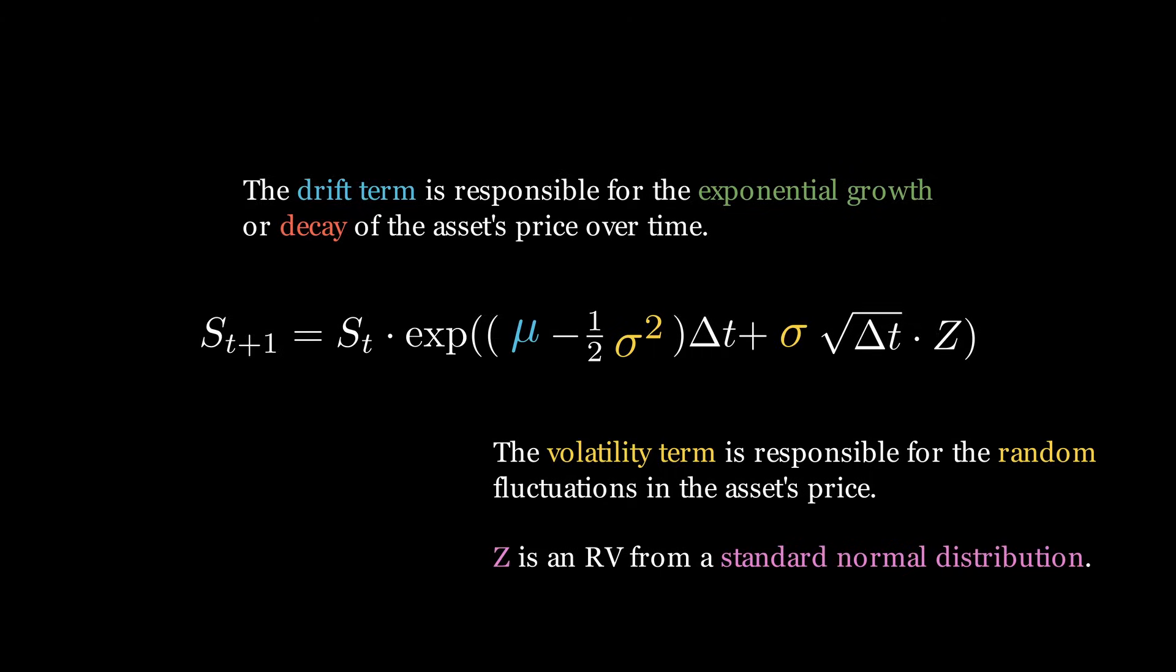With geometric Brownian motion, the only two terms you need to remember are mu and sigma. Mu is responsible for the drift, and sigma is responsible for the noise.